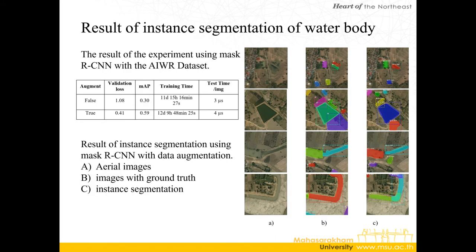The results show that the loss error value from the training process without augmentation was up to 1.08, resulting in a MAP as low as 0.3. But when tested again using data augmentation, the loss error was reduced to only 0.41 and the MAP increased to 0.59, which is almost two times higher. However, the data augmentation process takes 12 days and 9 hours to learn. The results show that data augmentation in data training leads to better results of segmentation.